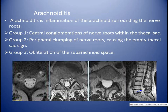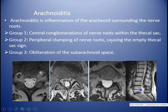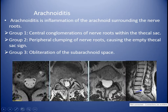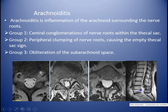Arachnoiditis is inflammation of the arachnoid surrounding the nerve roots, causing displacement of the nerve roots. It is classified into three groups. Group 1: central conglomeration of the nerve roots within the thecal sac. Group 2: peripheral clamping of the nerve roots, causing an empty thecal sac sign. Group 3: the nerve roots conglomerate together causing a soft tissue mass-like appearance in the subarachnoid space, with obliteration of the subarachnoid space. Causes today include surgery and trauma.